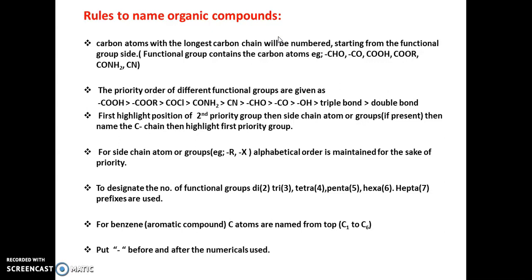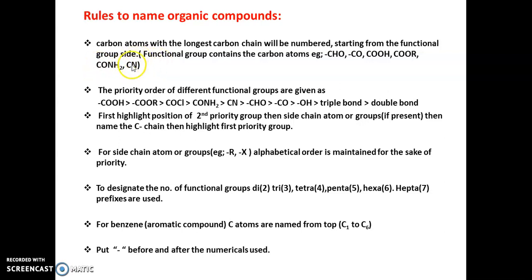In the longest carbon chain, you could find functional groups that contain a carbon atom. The aldehyde group CHO contains a carbon atom, so this carbon will be numbered. Ketone CO contains a carbon atom, so it will be numbered. Carboxylic acid COOH also contains a carbon atom, so it will be numbered. Ester COR, amide CONH2, and cyano group all contain carbon atoms that are also numbered.